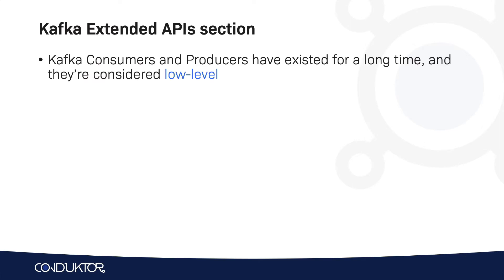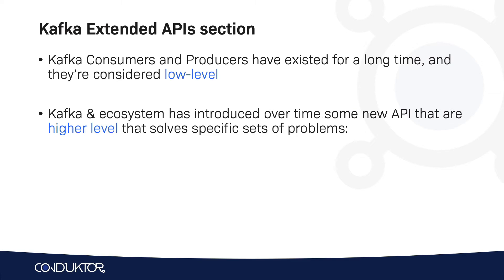We have learned about all the Kafka fundamentals, and we've seen consumers and producers. These have existed for a very, very long time, but they're considered low-level APIs because we have to deal directly with sending and receiving messages in Apache Kafka. But then Kafka and the ecosystem has introduced, over time, some APIs that are going to be higher level, and they're going to solve specific sets of problems.